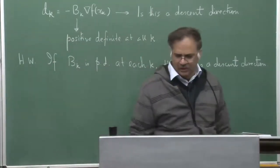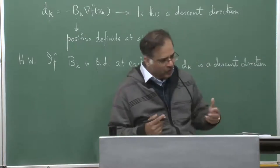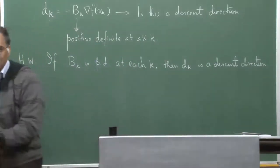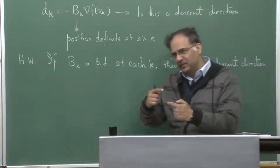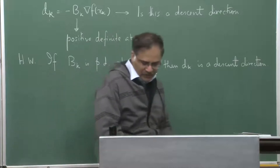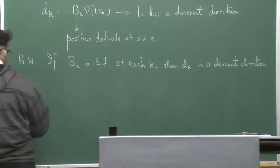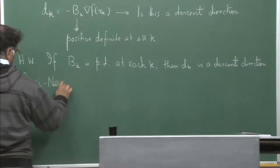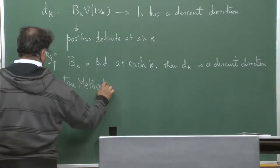Once we know this, the question is: how do we construct B_k? This whole story of constructing B_k — the initial one could be the identity matrix, but then at every step we have to update and get a new B_k, and that new B_k should always be positive definite. This gives rise to a whole gamut of methods called the quasi-Newton methods, which are quite powerful and actually used in software.